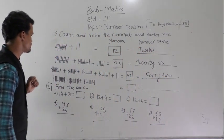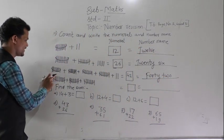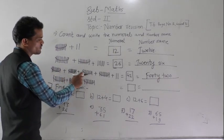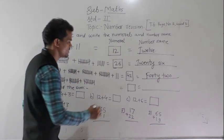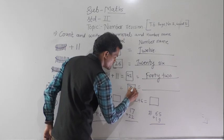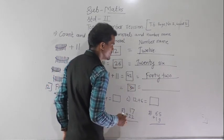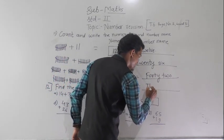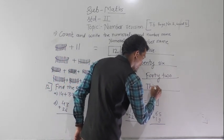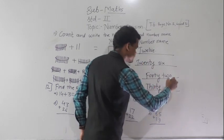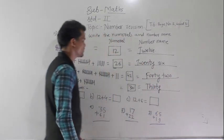Next: 10 plus 10 equals 20, and 20 plus 10 equals 30. Write the numeral 30 and write the spelling: T-H-I-R-T-Y.